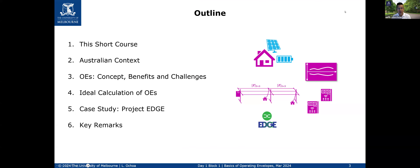This is the outline of today's block number one. I will briefly cover housekeeping about this short course and share some stats about the registration, which are very interesting. We will move to the Australian context — 45% of registrations are from outside Australia, so understanding the Australian context, how much solar photovoltaics we have, is a very important component. We will then move to operating envelopes as a concept: the benefits, and some of the challenges — and there are many, many challenges.